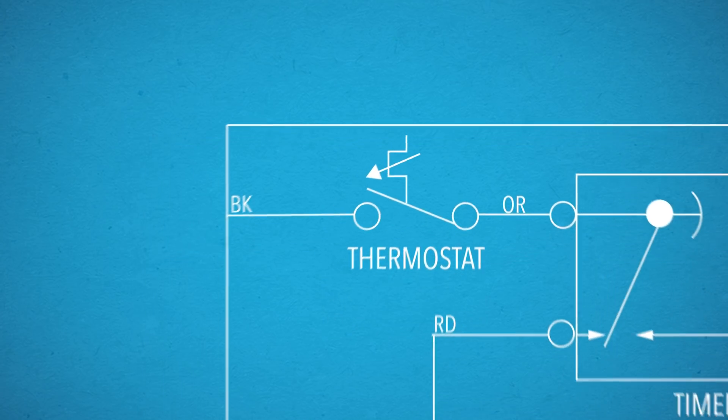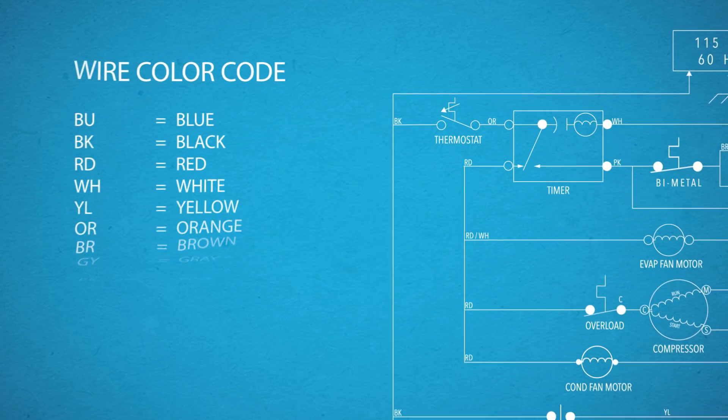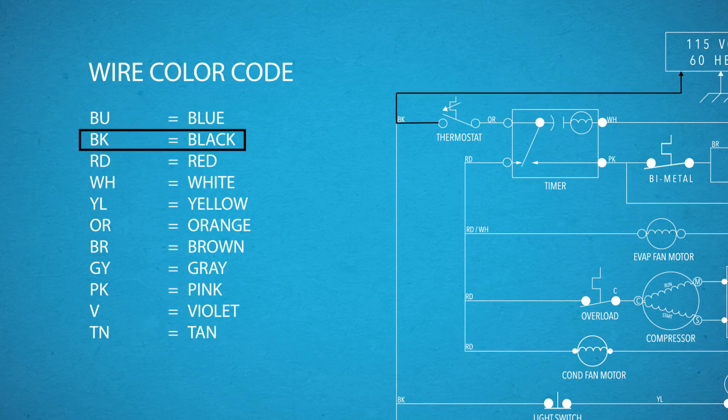There's a chart that shows wire color abbreviations right on the schematic. The color chart will help you check the right wires so you can figure out what's causing the appliance failure.